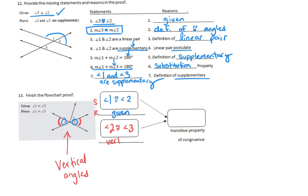The reason angle 2 is congruent to angle 3 is that they are vertical angles. Putting it together: angle 1 is congruent to angle 2, and angle 2 is congruent to angle 3 — so angle 1 must be congruent to angle 3 by the transitive property. It transfers that equality: angle 1 is the same as angle 2, and angle 2 is the same as angle 3.